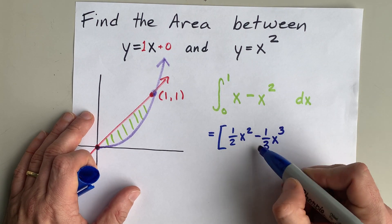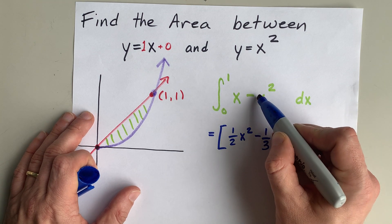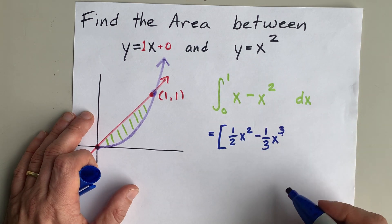The answer is 1 third x to the 3. Again, the derivative of this, bring the 3 down, 3 times 1 third is 1, which is the coefficient here, and the 3 gets notched down to become 2.